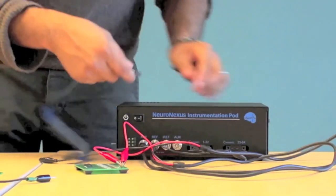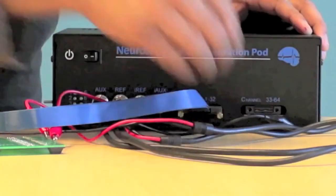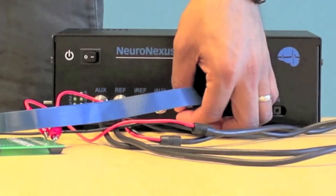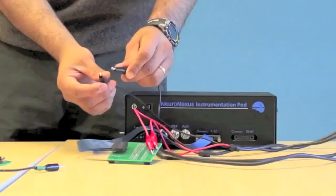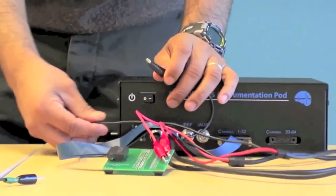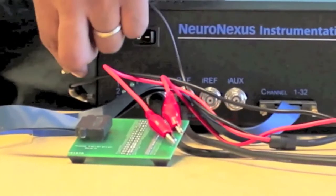Then take the blue cable and since we are only using 32 channels, plug it into the 32 channel slot and tighten. Then clip the black alligator pins to the ground pin located on the side of the Nipod body like this.